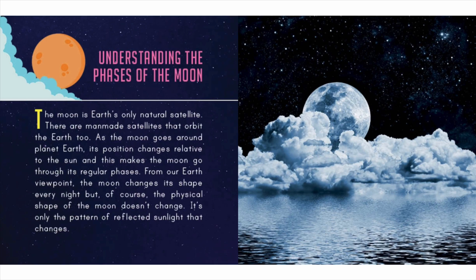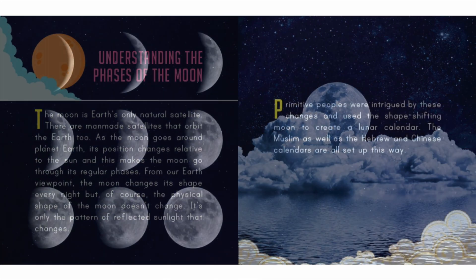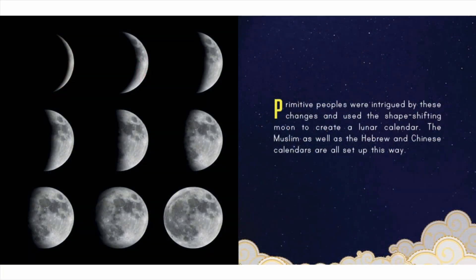From our earth viewpoint the moon changes its shape every night, but of course the physical shape of the moon doesn't change — it's only the pattern of reflected sunlight that changes. Primitive peoples were intrigued by these changes and used the shape-shifting moon to create a lunar calendar.